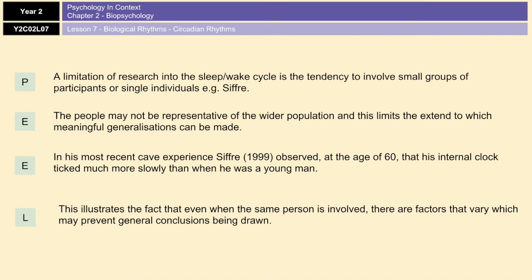For example, in Siffre's most recent cave study, at the age of 60, he observed that his internal body clock ticked much more slowly than when he was a young man. It almost doubled in length, which illustrates that even when the same person is involved, there are certain factors that vary which may prevent general conclusions from being drawn. That is a limitation of a lot of research into the sleep-wake cycle.